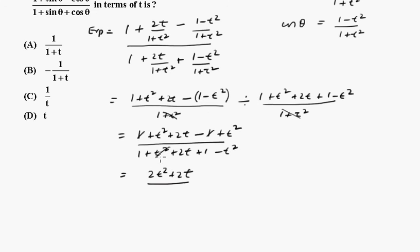Now the t squareds go out and we get 2t plus 2, 2t plus 2.